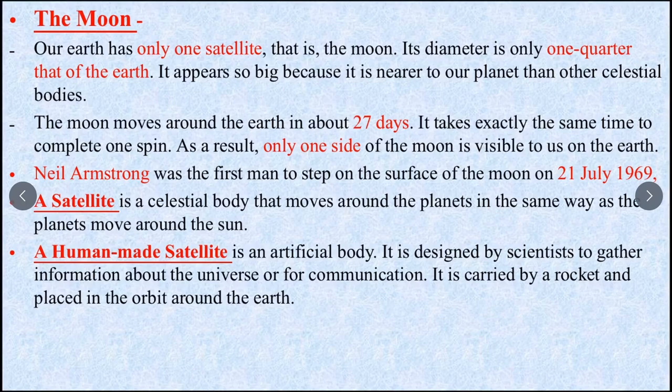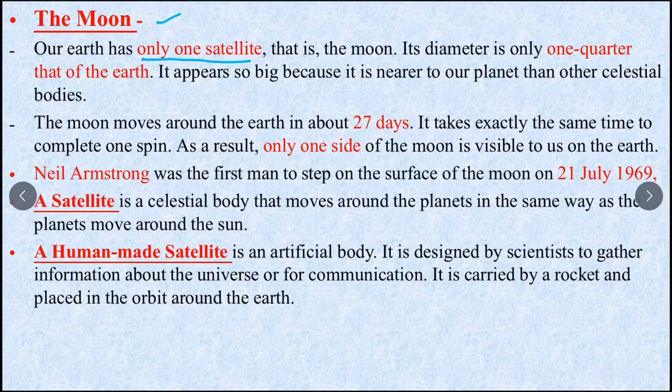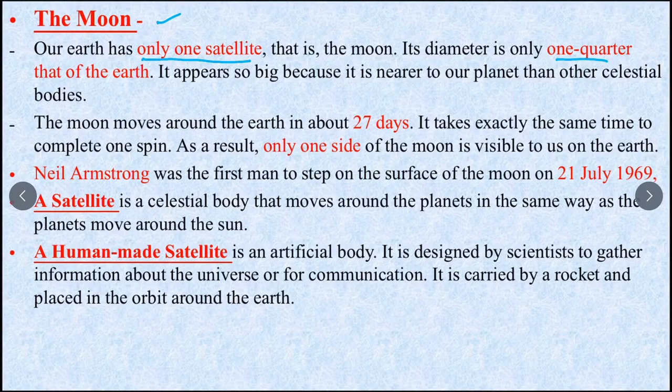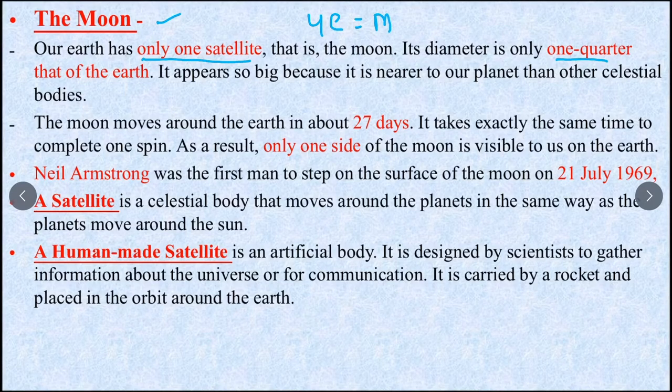Now we will see about the Moon. Our Earth has only one satellite - a natural satellite called Moon. Its diameter is one-quarter of Earth. It means that Moon's diameter is 1/4 of Earth's diameter.